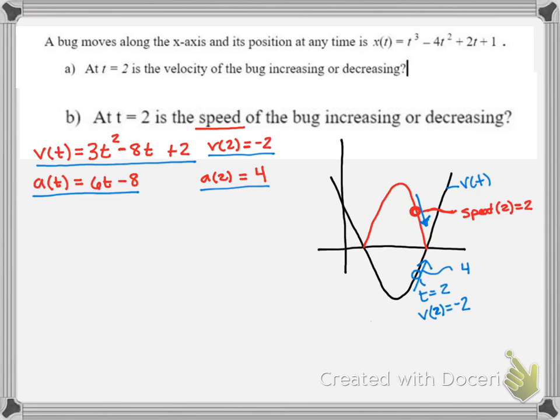If we were to justify our answer on a problem like this, we would need to actually show the graph and explain how the derivative of speed is negative.